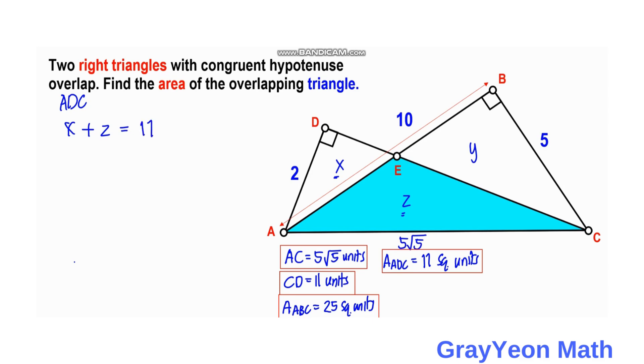For triangle ABC, the triangle is composed of Y and Z. So Y plus Z equals the area of ABC, which we calculated as 25 square units, so this is 25.